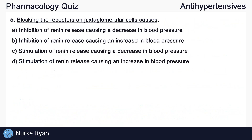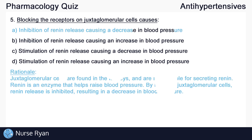Question number five: blocking the receptors on juxtaglomerular cells causes... The answer here is A — inhibition of renin release, causing a decrease in blood pressure. Juxtaglomerular cells are found in the kidneys and are responsible for secreting renin. Renin is an enzyme that helps to raise blood pressure. By blocking juxtaglomerular cells, renin release is inhibited, resulting in a decrease in blood pressure.